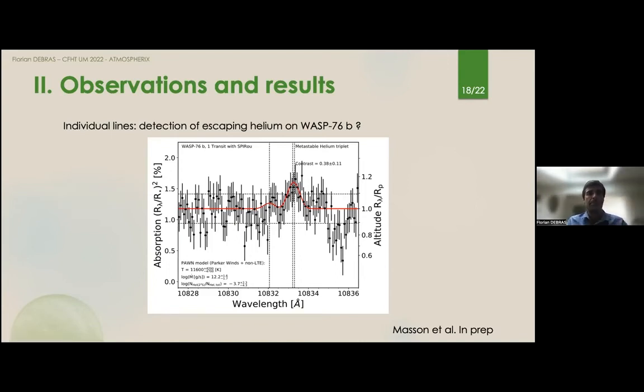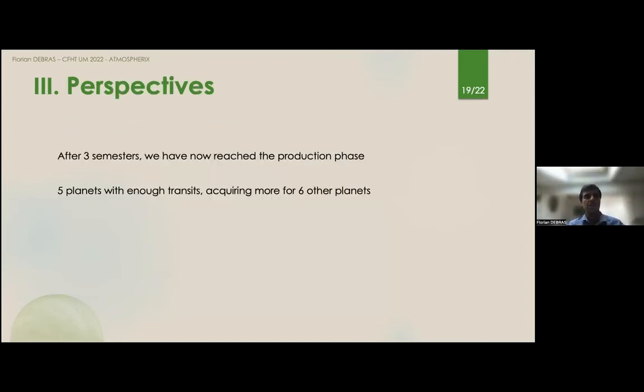That's kind of a tour of our observations and results. What I want to say is that after a bit more than three semesters, we have stopped being in the development phase, and we have now reached the production phase where there will be publications about all the work we've provided. We have five planets which can already be characterized. And for the sixth one, we need to acquire more transits, but it's just a matter of time.